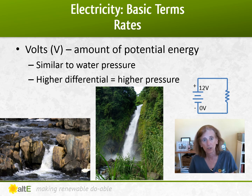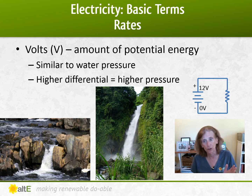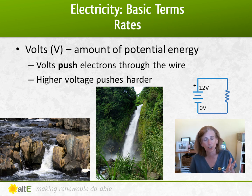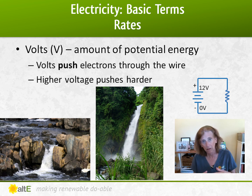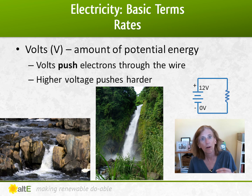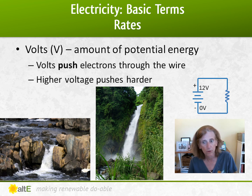Volts is the amount of potential energy. It's very similar to water pressure — the higher the differential, the higher the pressure. Volts is what pushes the electrons through the wire. With water, if you have a really small waterfall you're going to have not that much flow, but if you have a much higher waterfall you're going to have a lot more pressure. Same with electricity: the higher the voltage, the bigger the push, the higher the flow. Here you can see the difference between two points of the circuit — zero volts at the negative and 12 volts at the positive — giving us a 12-volt differential.